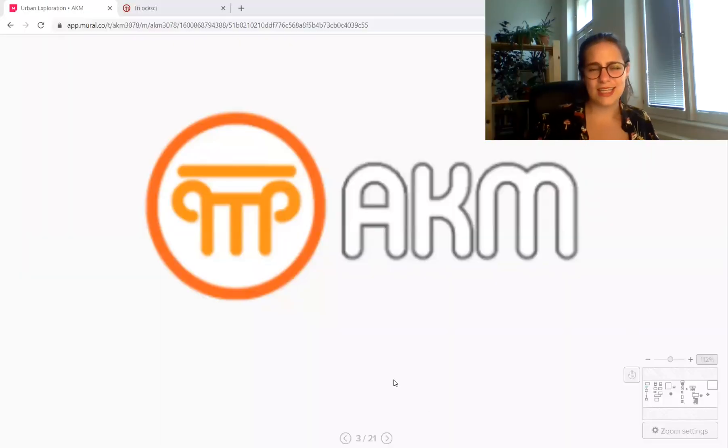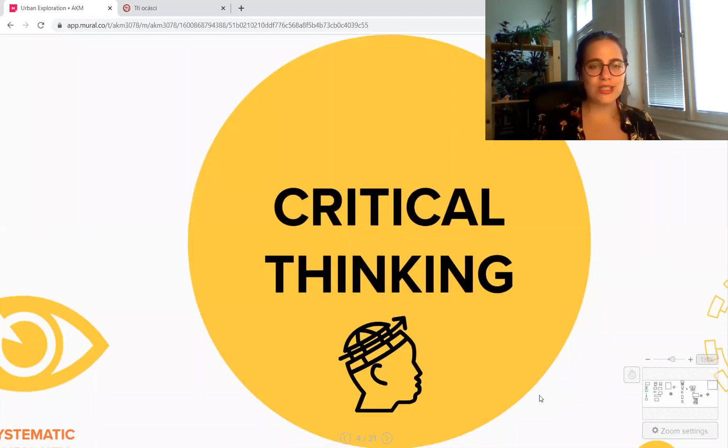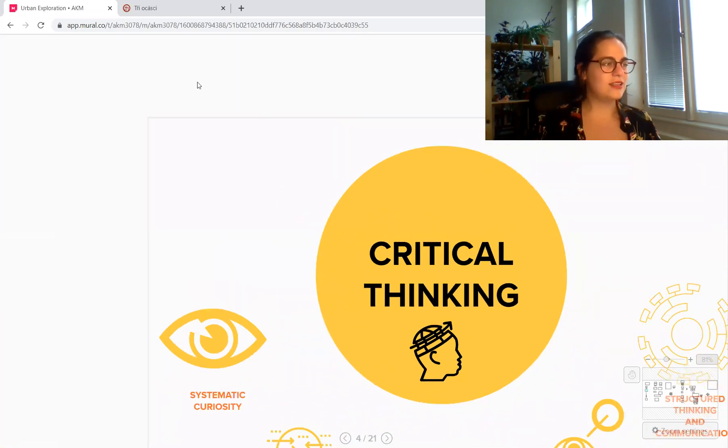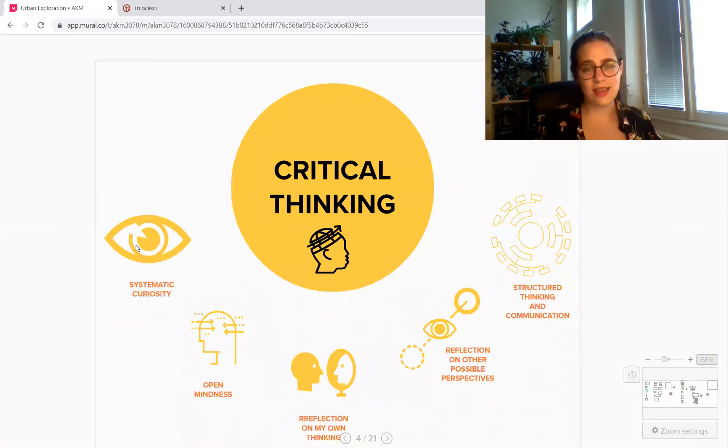Welcome to my workshop. How do I understand critical thinking? First of all, I think that critical thinking is reflected in a systematic curiosity. It means I'm going around the world and I'm looking around and I'm always an ape.